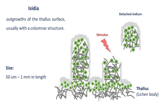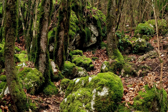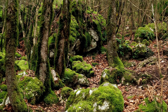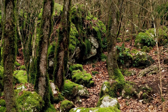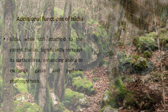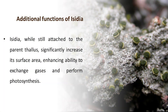Isidia are a highly fragile structure and can be easily broken by various agents such as wind, rainwater, or animals. If they land in a favorable environment, they can give rise to new lichens, contributing to the spread and survival of these species across different habitats. Beyond their role in reproduction, isidia, while still attached to the parental thallus, significantly increase its surface area, boosting the lichen's ability to exchange gases and perform photosynthesis — a benefit particularly crucial in environments where maximizing these processes is essential for survival.